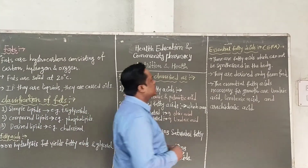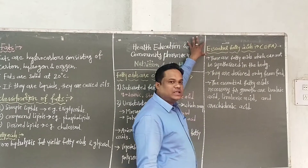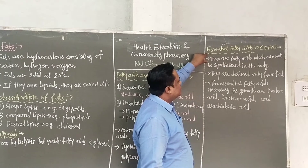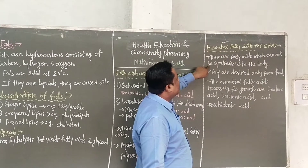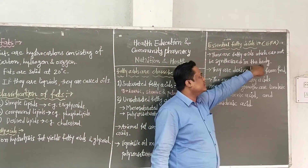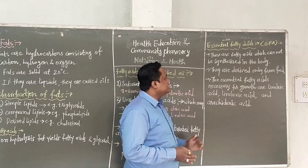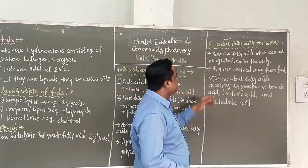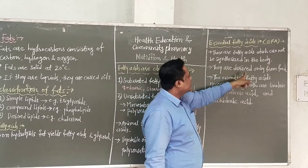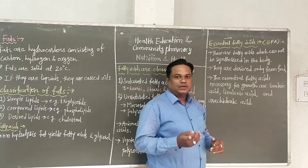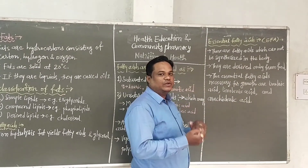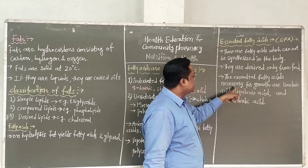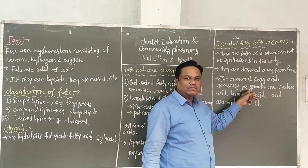Next we have to see EFA, meaning essential fatty acids. These are fatty acids which cannot be synthesized in the body; they are derived only from the food — from nutrition taken from food. Essential fatty acids are necessary for the growth of human beings.